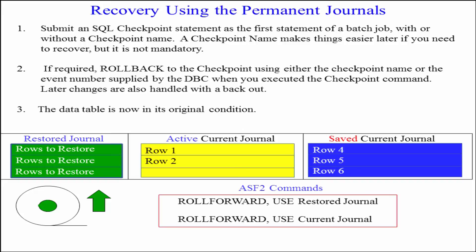Recovery using the permanent journals is done in this manner. Submit an SQL checkpoint statement as the first statement of a batch job, with or without a checkpoint name. A checkpoint name makes things easier later if you need to recover, but it is not mandatory. If required, roll back to the checkpoint using either the checkpoint name or the event number supplied by the DBC when you executed the checkpoint command. Later, changes are also handled with a back out. The data table is now in its original condition.